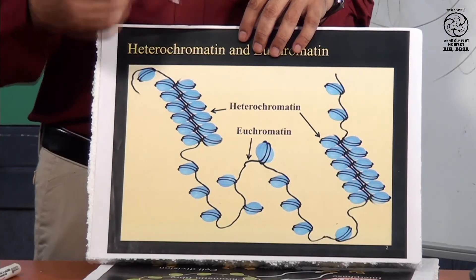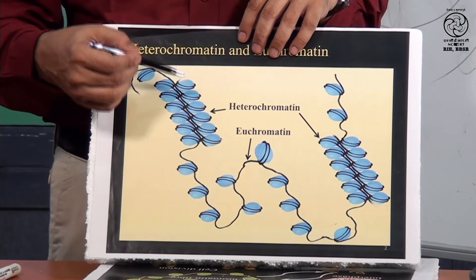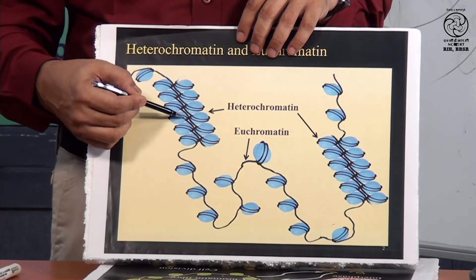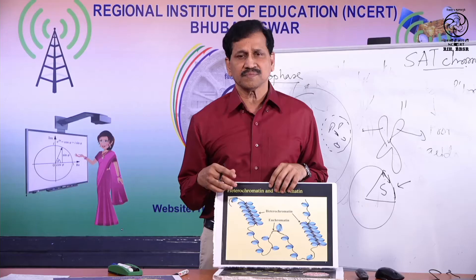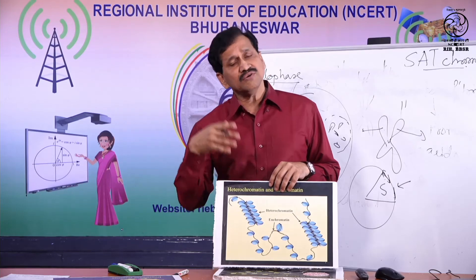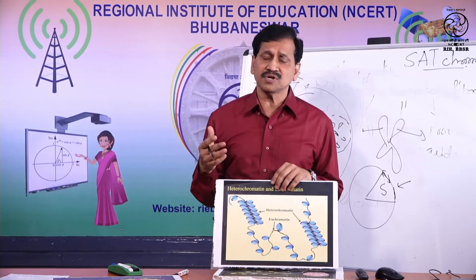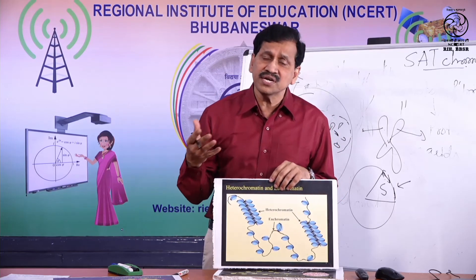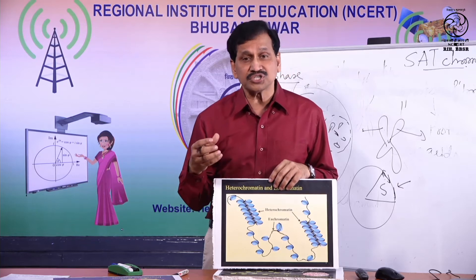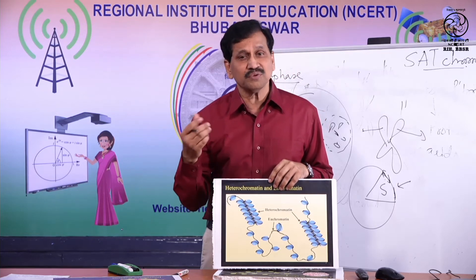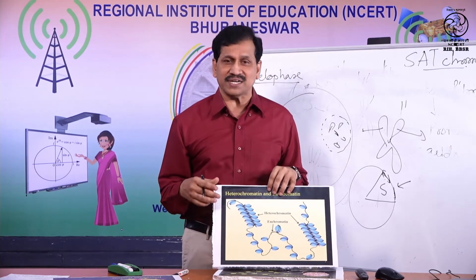So chromatin fiber has two regions: heterochromatin and euchromatin. When you study further, you will learn that heterochromatin may be of two types: constitutive heterochromatin and facultative heterochromatin.